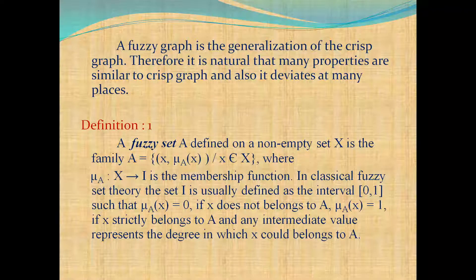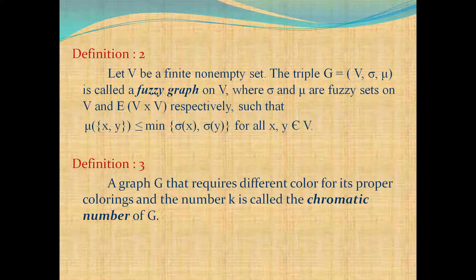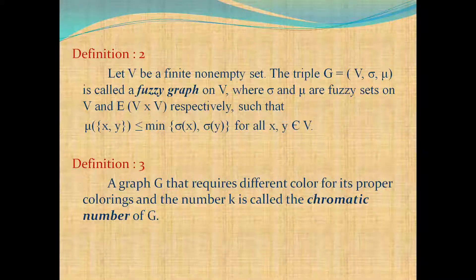Next definition: fuzzy graph. And next definition: chromatic number. A graph G that requires k different colors for its proper coloring, and the number k is called the chromatic number of G.